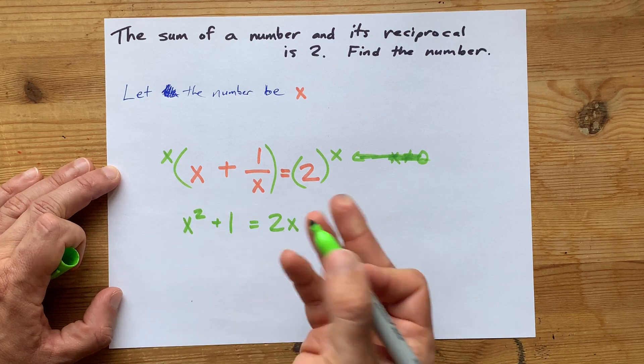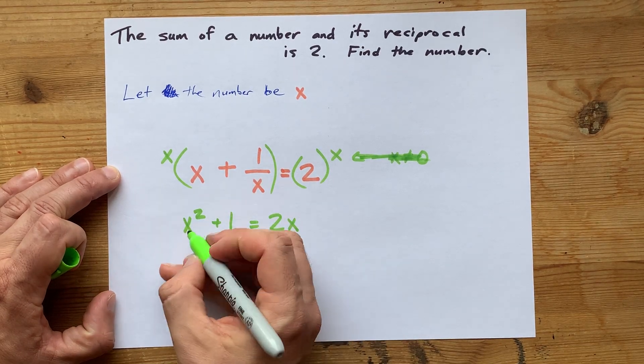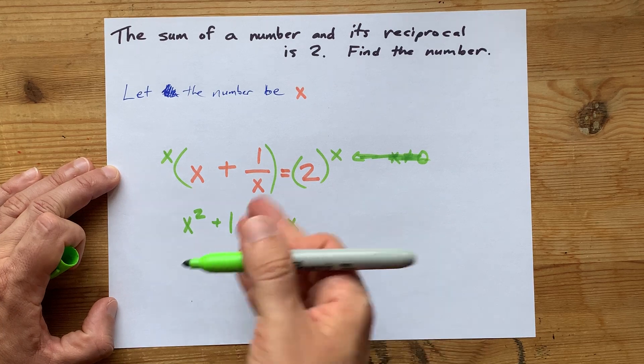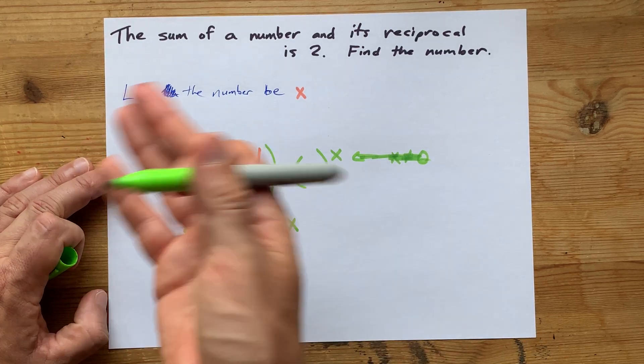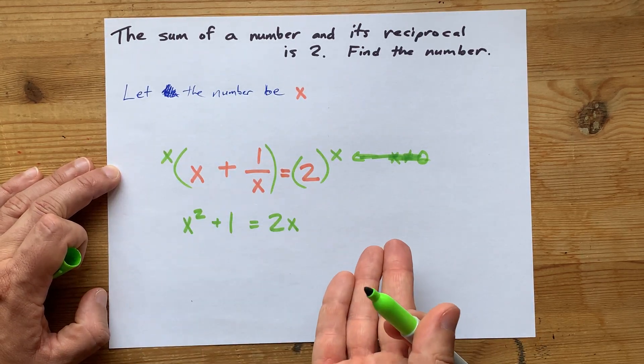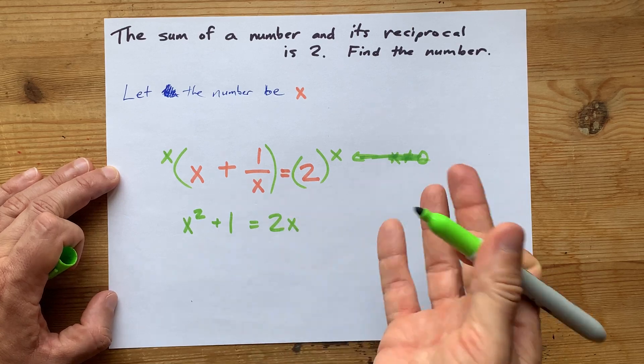Now we just have to solve this equation. There's an x squared in it, so it's quadratic. That means we're going to have to turn it into a standard form or something, and then we'll see if we can solve it from there.